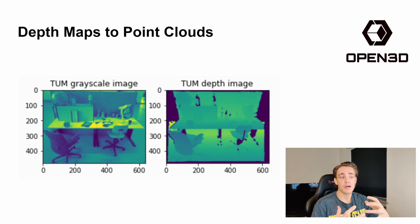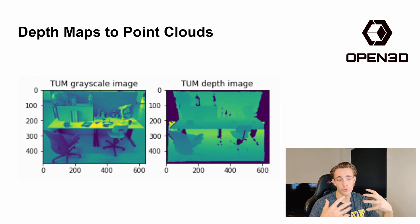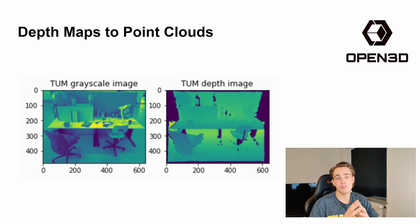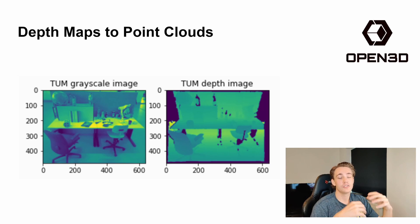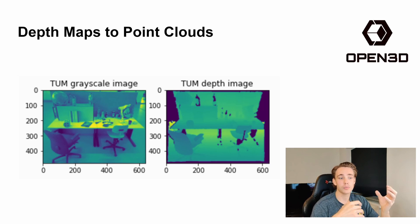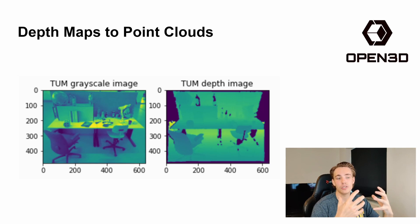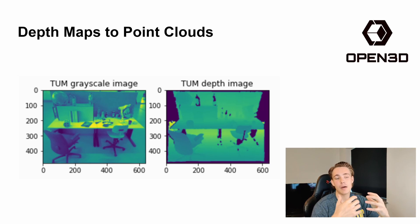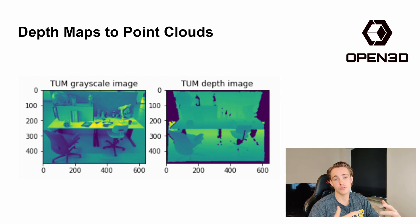First of all, this video is about how we can get our depth maps and color images, pass them to the Open3D library, and get out a point cloud that we can do all our operations on. We have a depth map on the right and a grayscale RGB image of the environment — a table with different objects. We'll look at a couple of datasets, and in the next video we'll take our own images from a stereo camera or using deep learning. We just need a depth map and a corresponding color image, pass those two to Open3D, and it spits out a point cloud.